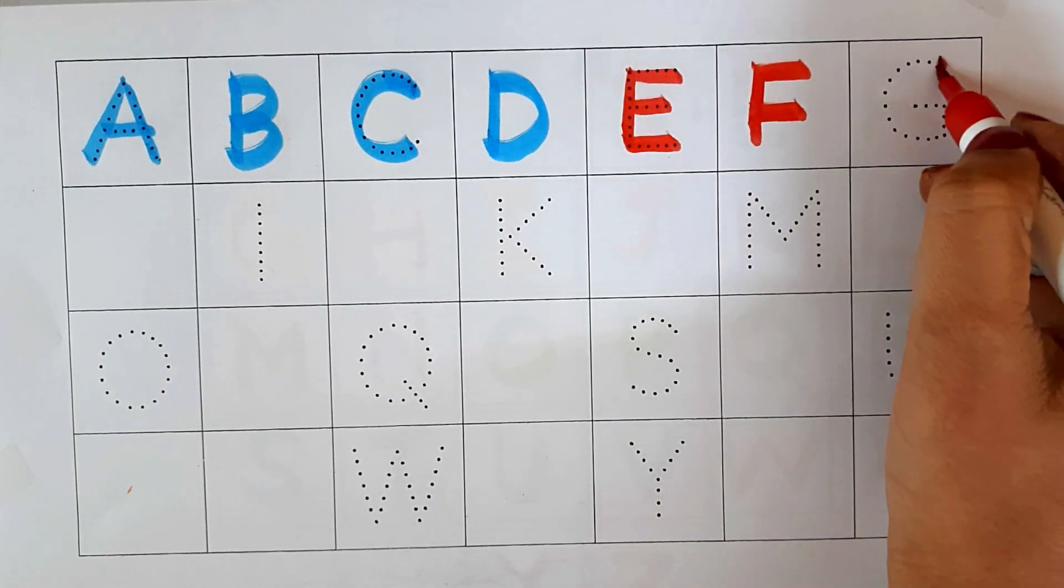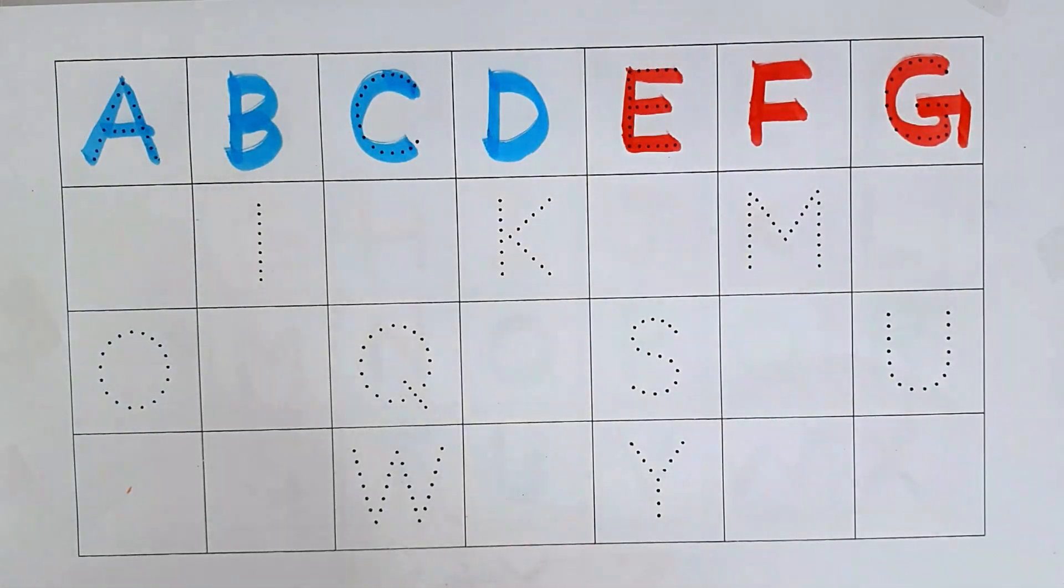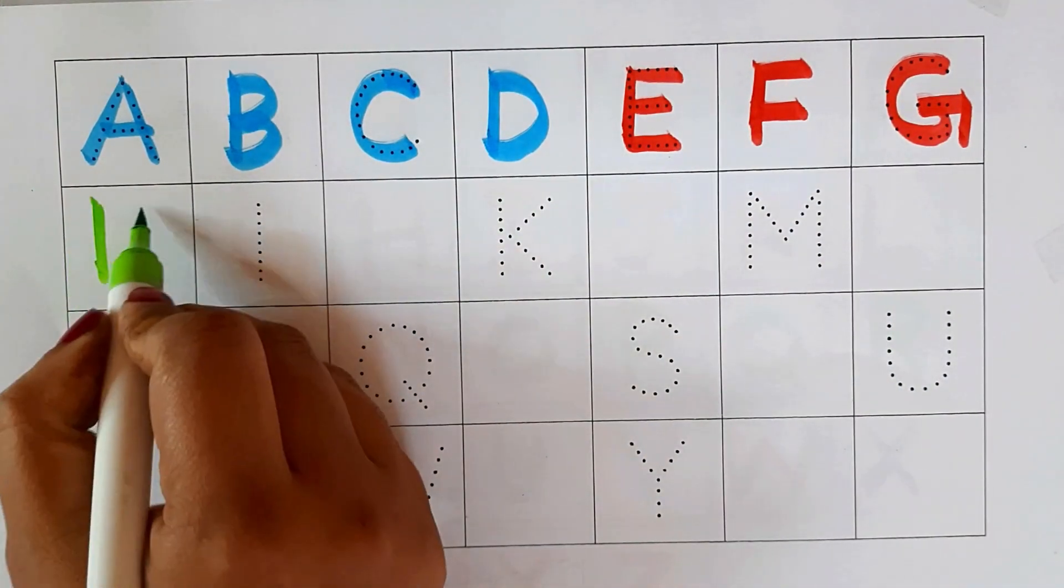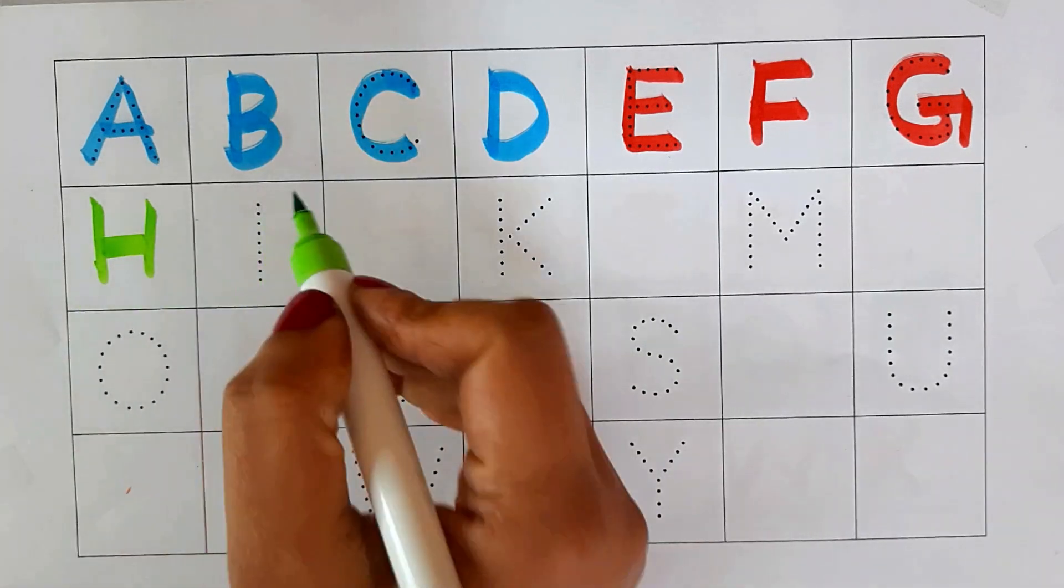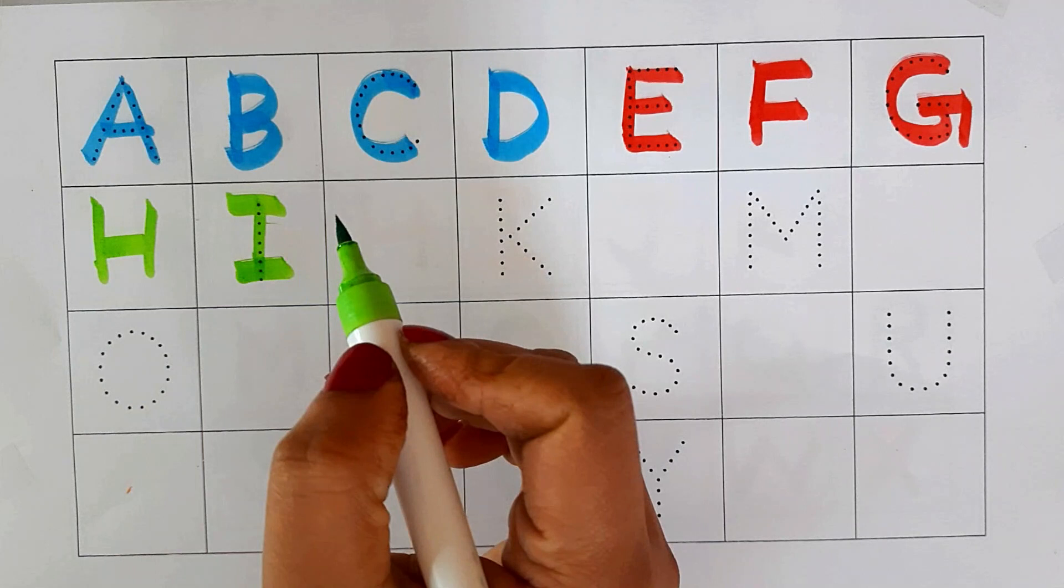F for fig in red. G for gun in green. H for horse in green. I for iron in green.